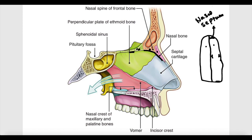It is called the cribriform plate because it contains many foramina. These foramina allow the rootlets of the olfactory nerve to extend superiorly, reaching the olfactory bulb — discussed in more detail in another video. The posterior part of the roof of the nasal cavity is formed by the downward sloping of the sphenoid bone.